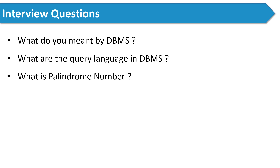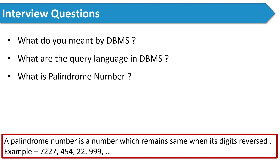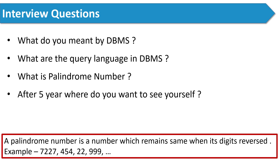The next question the interviewer asked was: what is a palindrome number? It's a very easy question. A palindrome number is a number which remains the same when its digits are reversed — for example, 454, 22, or 999.